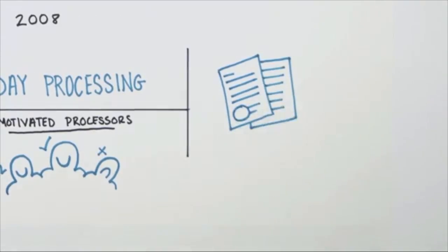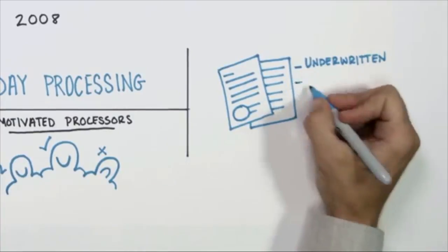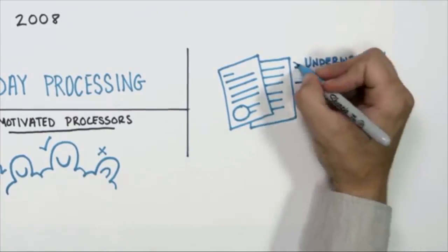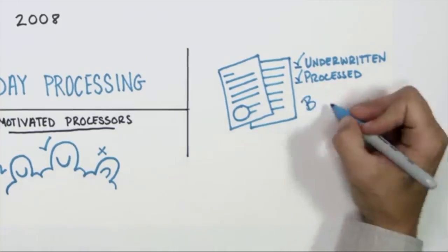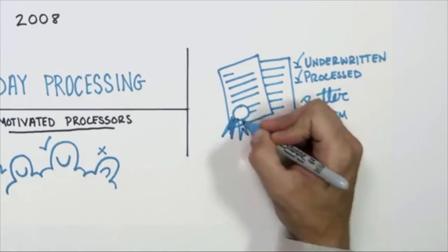So now what do you have? You have a file that's been fully underwritten. You have a file that's been fully processed. And before the realtor even starts to make offers for the client, we have a completely approved loan signed, sealed, and delivered.